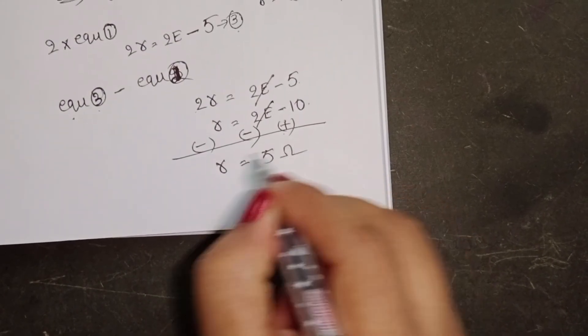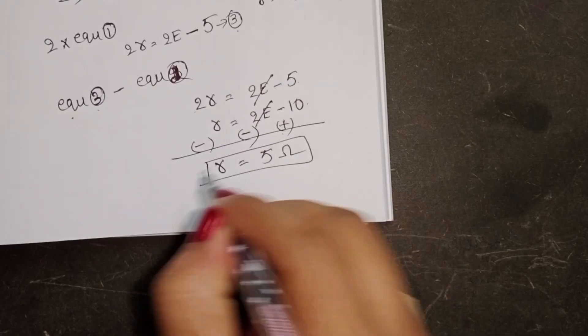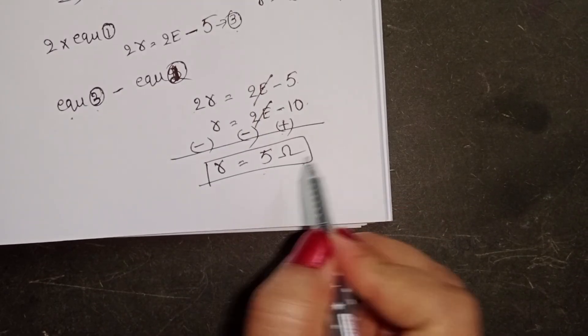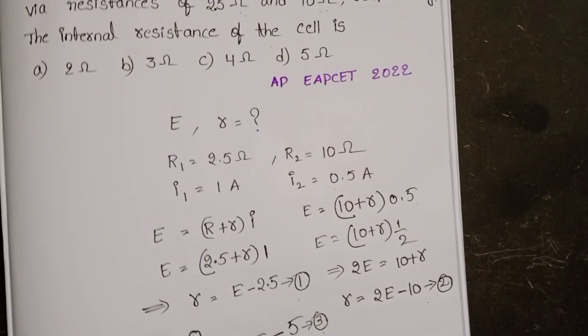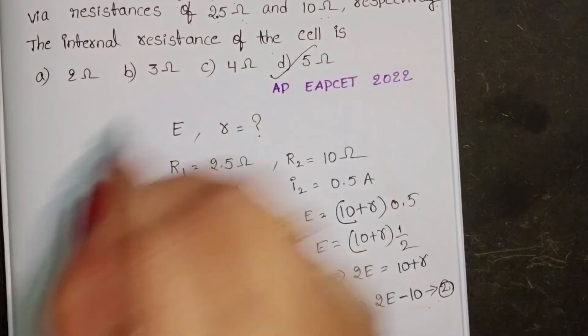So internal resistance of the cell equals 5 Ohm. Check the given options. 4th option is correct.